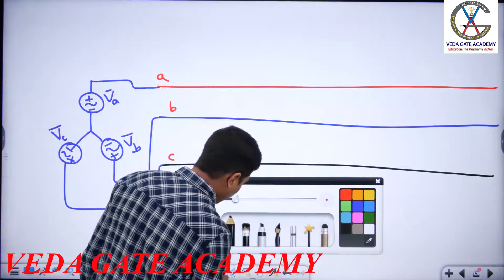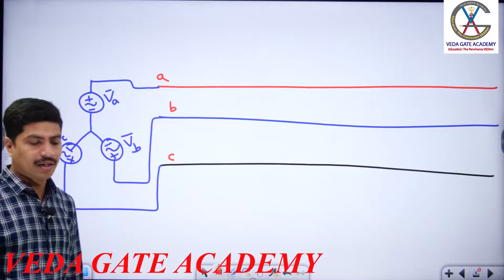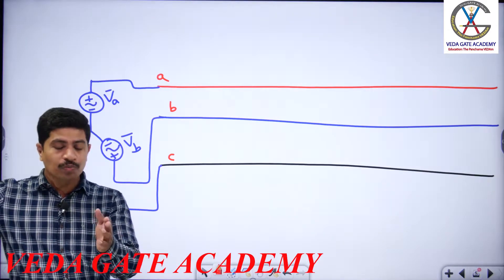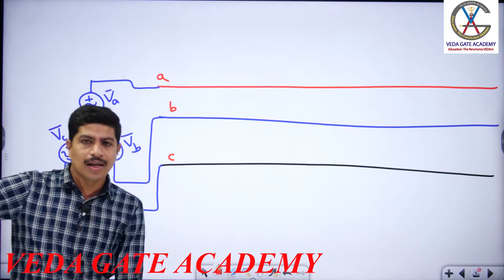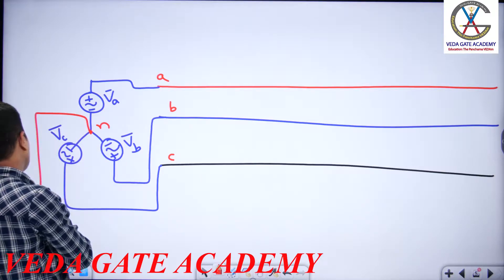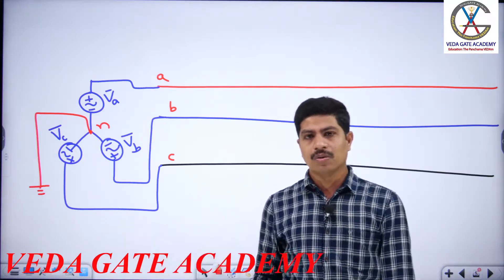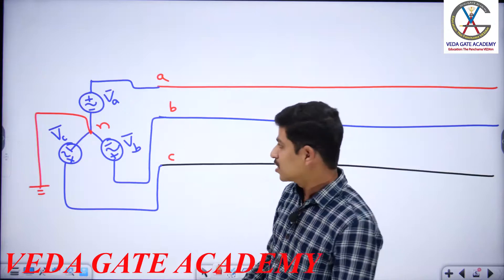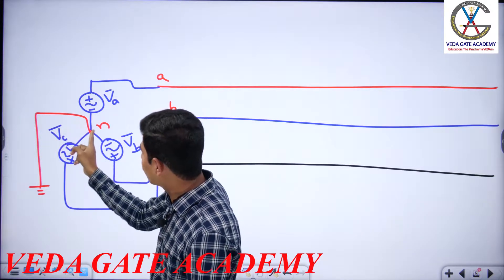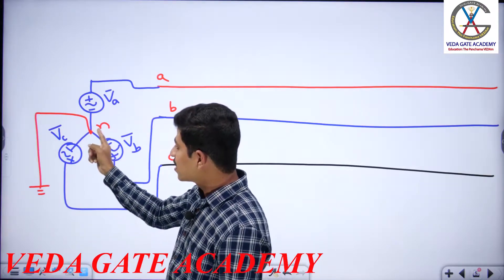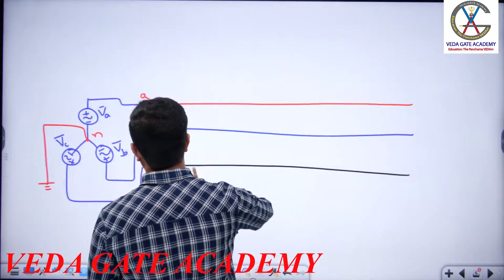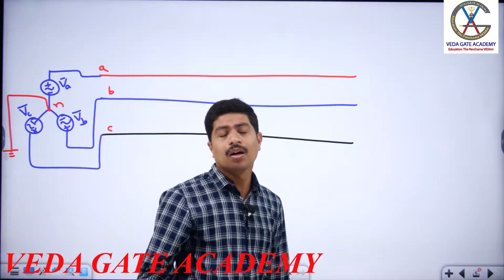You might be thinking: why have we taken only a star-connected generator and not a delta-connected generator? Remember: the generator always must be star connected. The reason for this we are going to understand in fault analysis. The point where all three phase wires meet is called the neutral. Connecting the neutral to the ground is called neutral grounding. Methods include resistance grounding, reactance grounding, and solid or effective grounding.